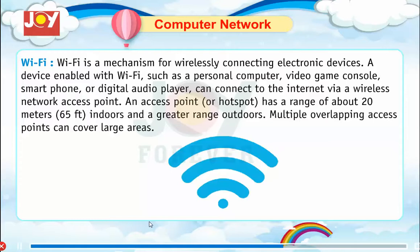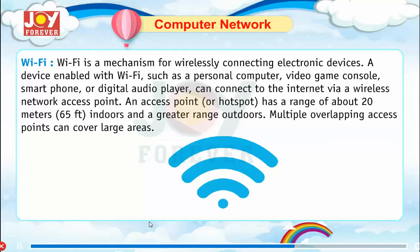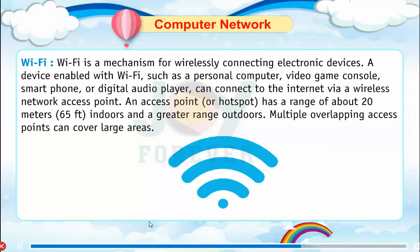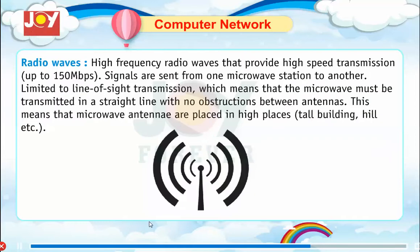Wi-Fi: a mechanism for wirelessly connecting electronic devices. A device enabled with Wi-Fi, such as a personal computer, video game console, smartphone, or digital audio player, can connect to the internet via a wireless network access point. An access point or hotspot has a range of about 20 meters indoors and a greater range outdoors. Multiple overlapping access points can cover large areas.